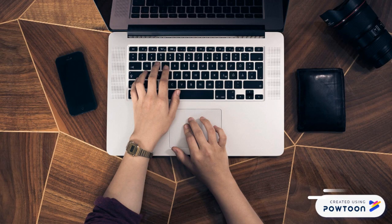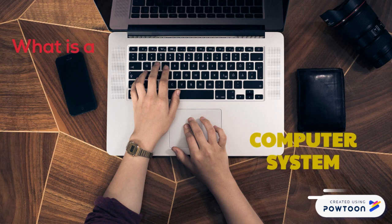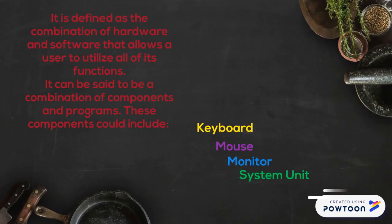Now that we know what a computer is, the next question is: what is a computer system? A computer system can be defined as a combination of hardware and software that allows you to utilize all of its functions. Your cell phone itself is a hardware device, and the software on the device allows you to perform different tasks. For example, to go on WhatsApp, you pick up the phone, turn it on, go to the app, and open it — you're using both hardware and software to complete that task.